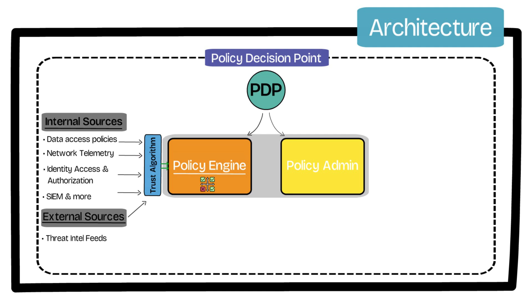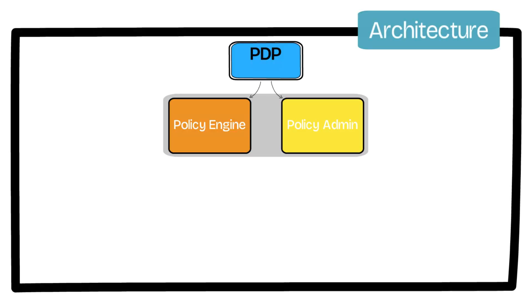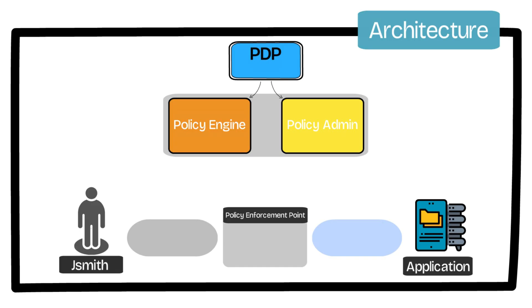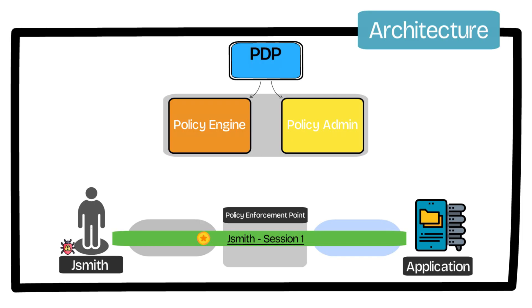Once a decision has been made, the policy engine instructs the policy administrator to generate session-specific authentication tokens or credentials. These are sent to the enforcement point and used by the client to access the requested resource. As outlined in the zero trust tenets, the tokens are valid only for the specific session requested and can be revoked at any given time.